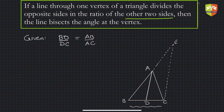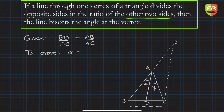You have to prove that angle BAD equals angle DAC. If angle BAD is x and angle DAC is y, then you have to prove that x is equal to y — in other words, that AD is the angle bisector of angle A.